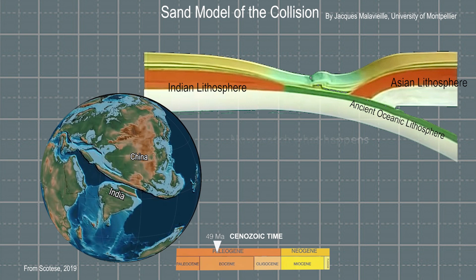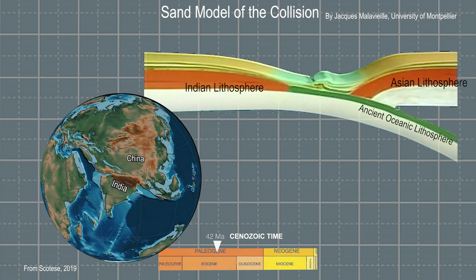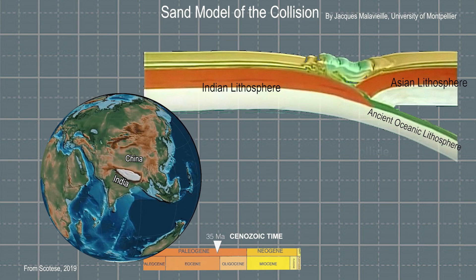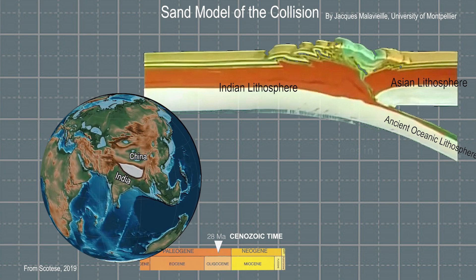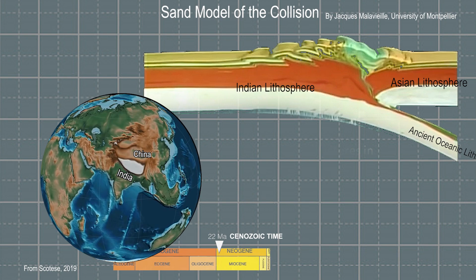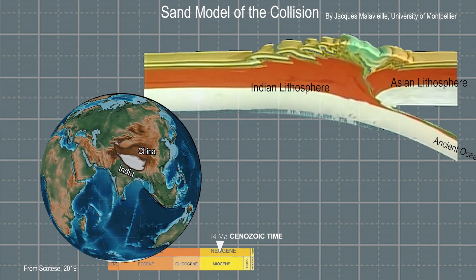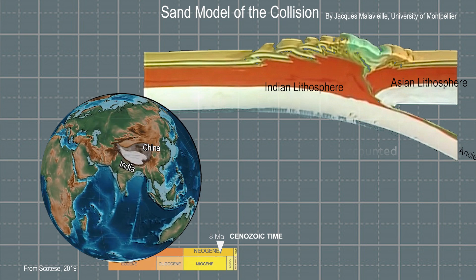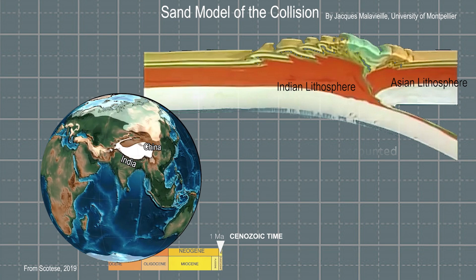One thing we do know is that the Asian monsoon is controlled by the rise of land in southern Asia, especially the world's highest mountains and plateau — the Himalayas and the Tibetan Plateau. Geoscientists are still collecting and interpreting evidence about how and when this uplift happened. Uplift began with the collision of India and Asia starting about 50 million years ago and continues today. So if we understand more about how and when the Himalayas and the Tibetan Plateau rose, we'd know more about how that affected the Asian monsoon.